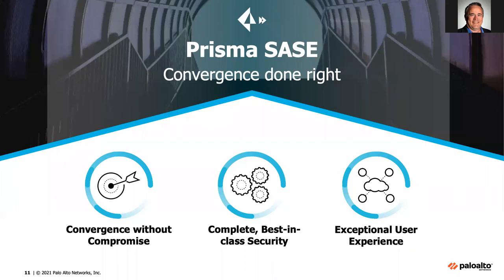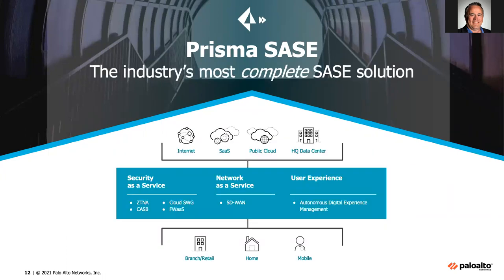Prisma SASE from Palo Alto Networks is a solution to all of these problems — converging the mobile user and the remote network or branch office solution together in one with complete best-in-class security. All the traditional security functionalities you'd see with an on-premise physical firewall, and great user experience because we're eliminating that backhaul. There are two pieces: Prisma SD-WAN and Prisma Access, and their combined solution gives us this full complete SASE solution.